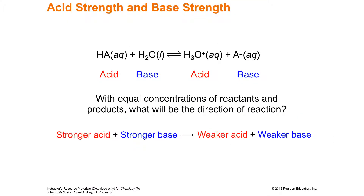If this is in a closed vessel, you have a reversible reaction. The acid plus water can yield hydronium plus the conjugate base, or the hydronium can break apart back into water plus the other acid. You actually have to conduct experiments to find out which direction is favored — it's not a guess.